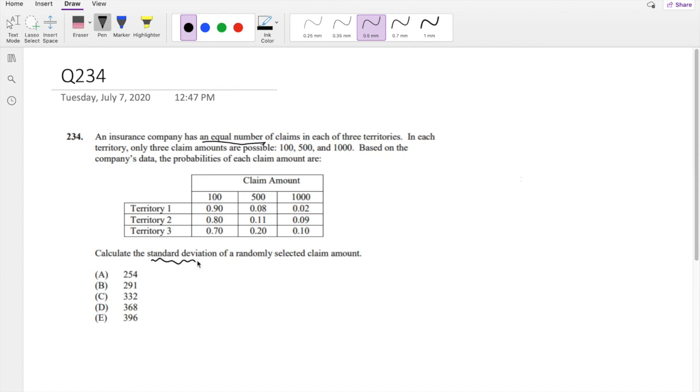And we're looking for the standard deviation. So for standard deviation, we know that standard deviation is just the square root of variance. So the variance formula is E[X squared] minus the expectation, the whole thing squared. And our X in our case, what are we looking for? We're looking for the claim amount. So this is our X. And we also know that these are equal number of claims in each of these three territories. So we know that the probabilities, we can actually average them.